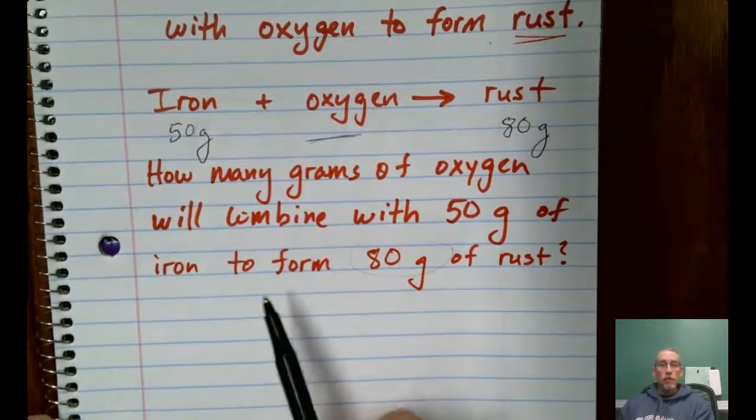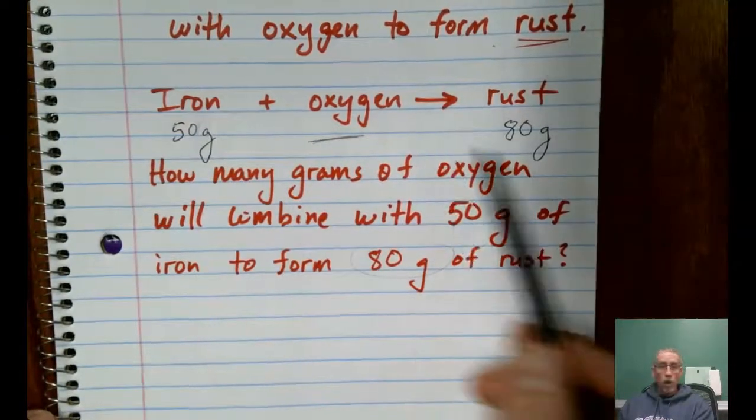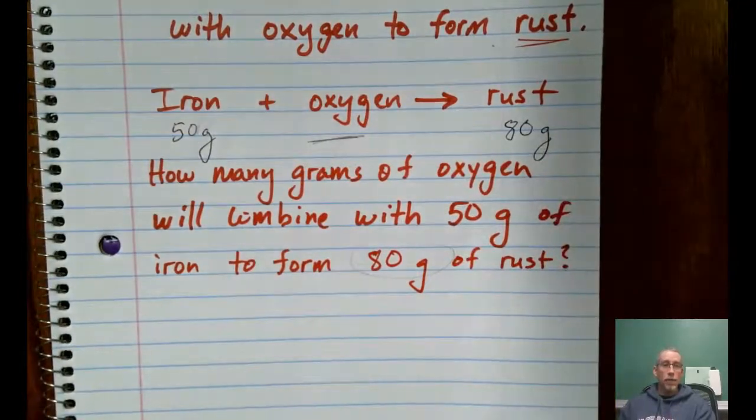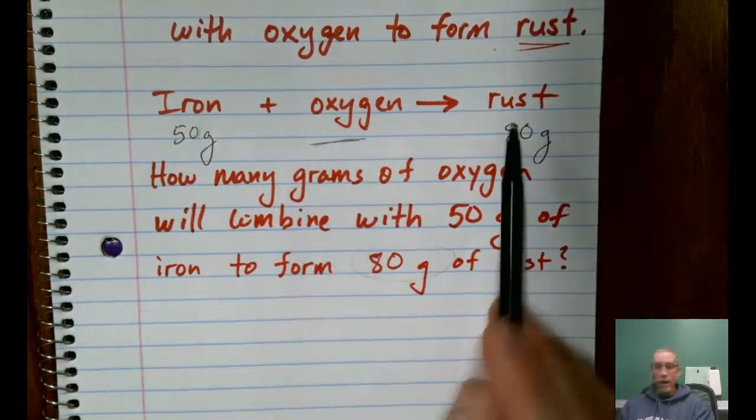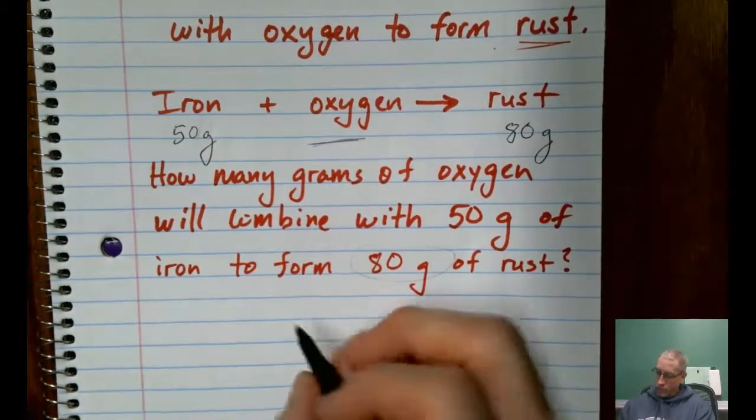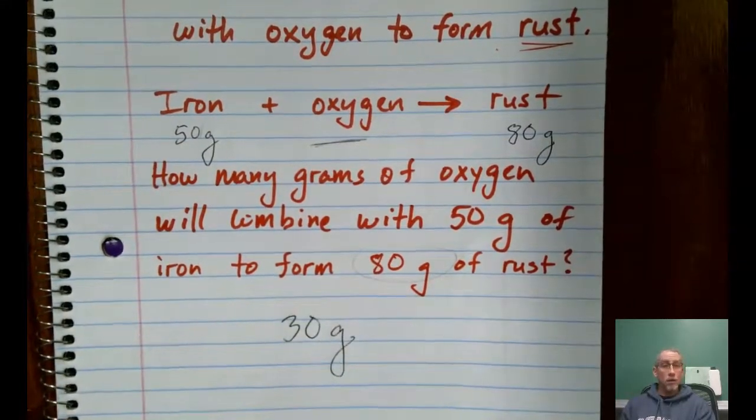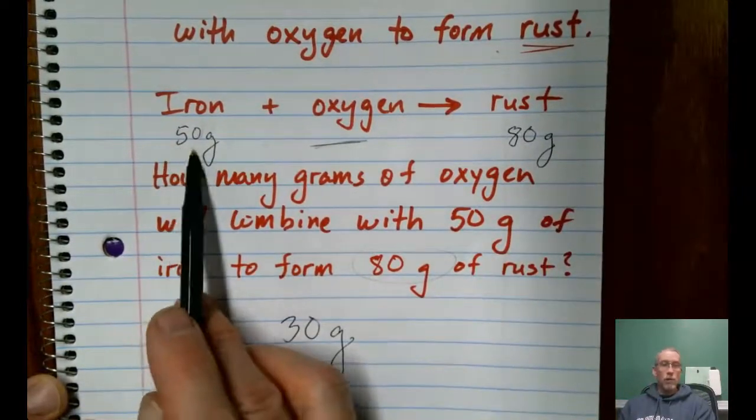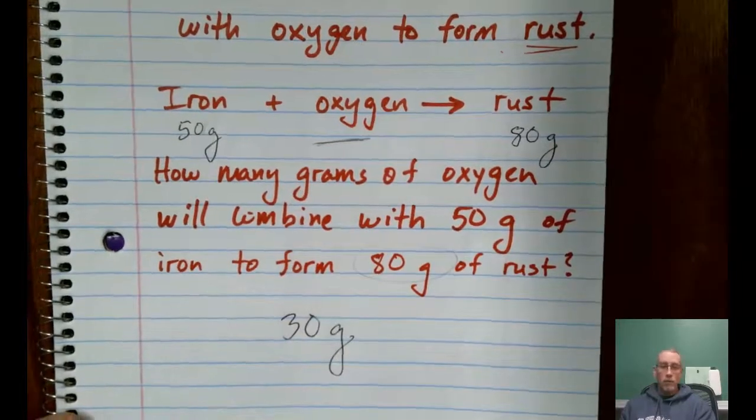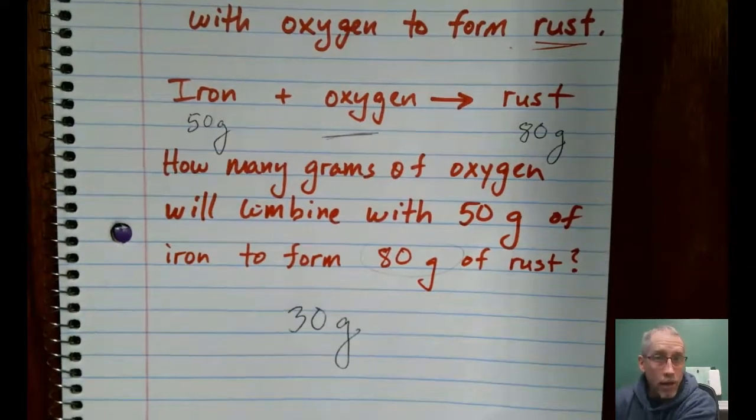Again, the idea of conservation of mass means the total mass of all the reactants and the total mass of all the products have to add up to the same number. So, 50 grams plus this number has to add up to 80. What is that number? 30 grams. Just did some subtraction there. 80 is what I ended with. I knew that 50 grams of it was the iron and the remaining 30 grams must have been the oxygen.